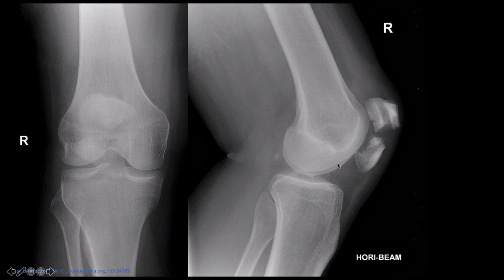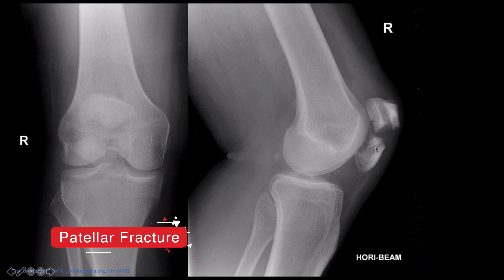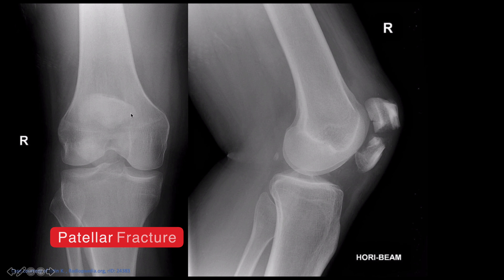In this next case there's an obvious fracture of the patella. You can see how the superior and inferior pole traction from the quadriceps tendon and the patellar tendon causes displacement, visible on the AP radiograph as well.